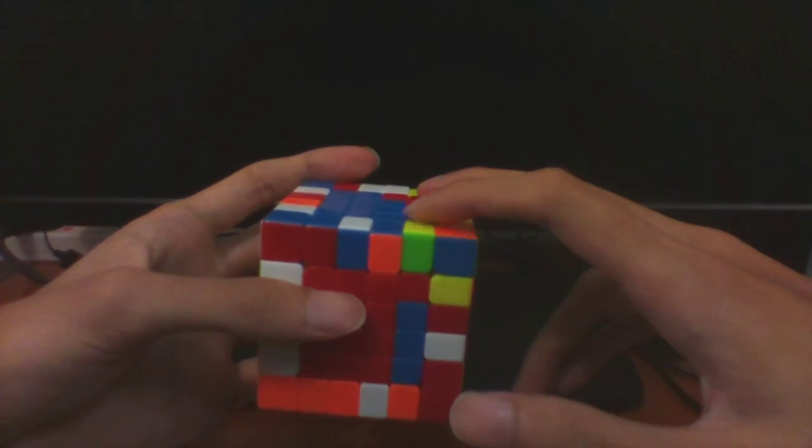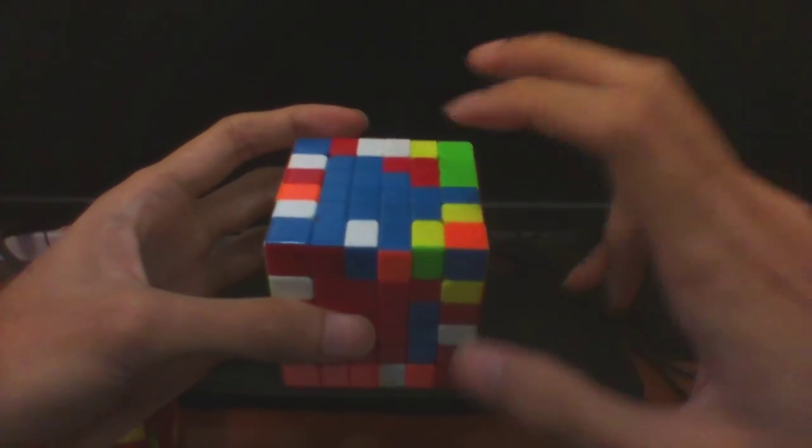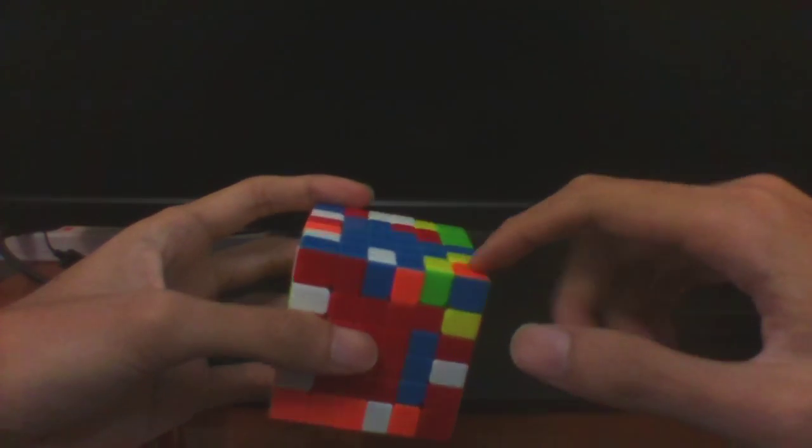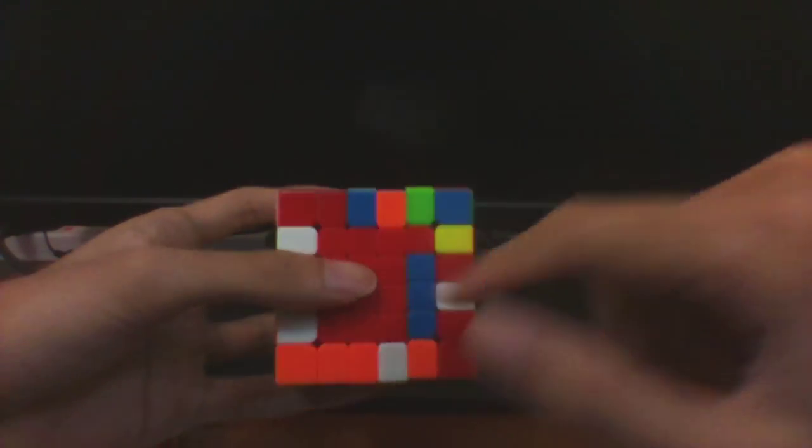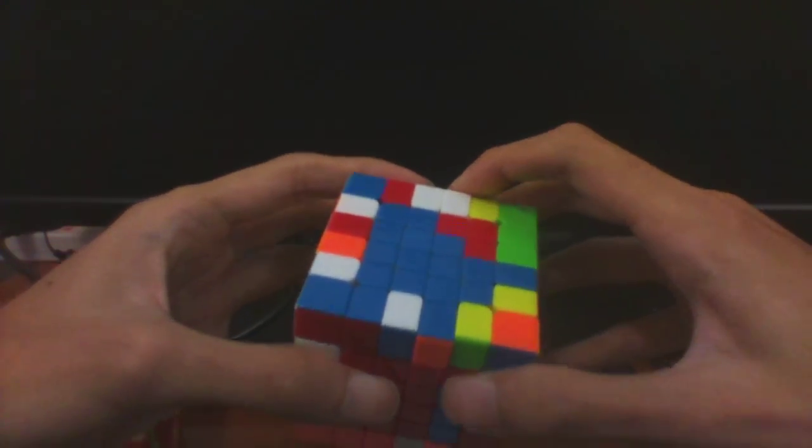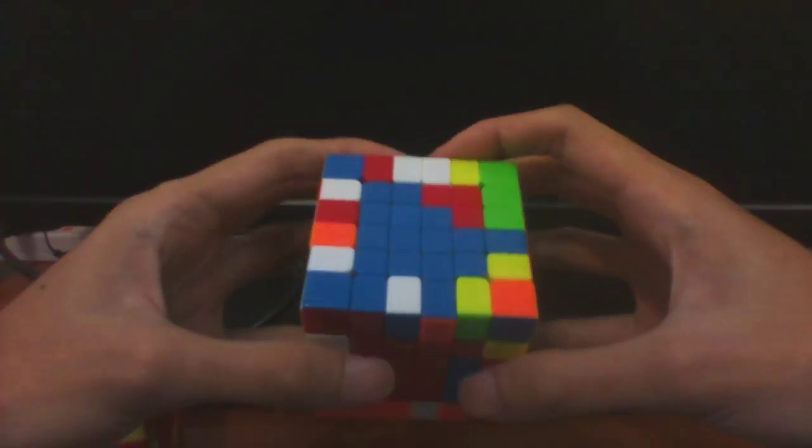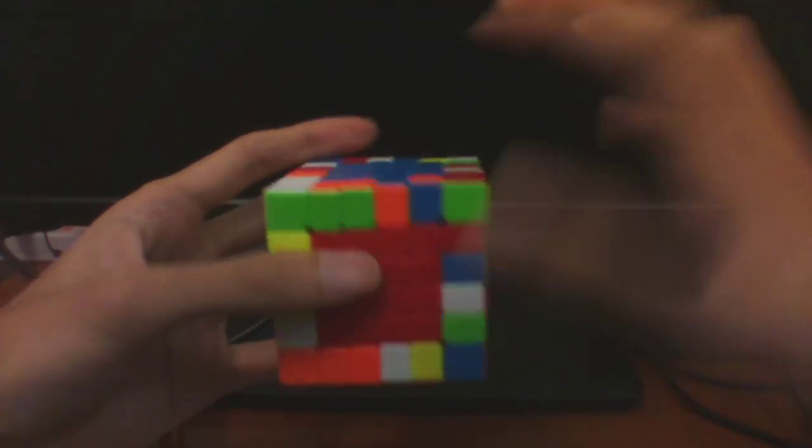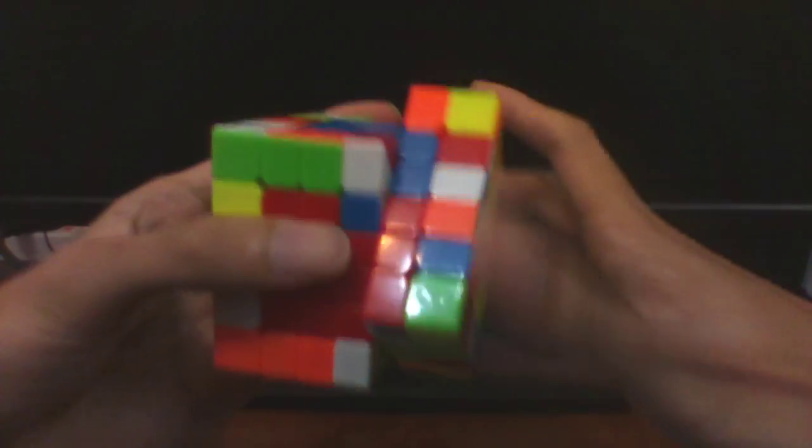So this is a 5 move case which is quite useful if you're planning to learn the full set for solving the last bar and I highly recommend learning it. This is just the inverse of this case.